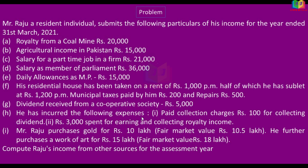He has incurred the following expenses. Paid collection charges Rs. 100 for collecting dividends — we need to claim that. And Rs. 3,000 spent for earning and collecting royalty income. Royalty income earned is Rs. 20,000, and Rs. 3,000 was spent for earning it, so you can claim that as a deduction.